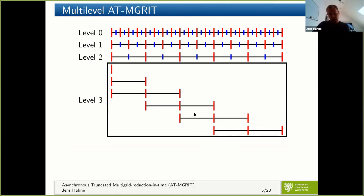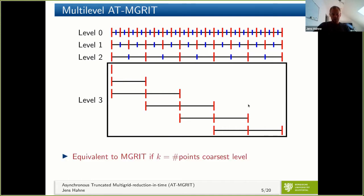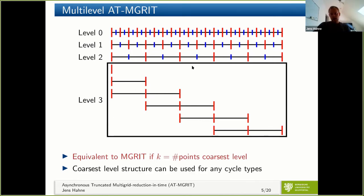We can extend this to a multi-level setting. We use classical M-Grid on the fine levels, and on the coarsest level — here a four-level multigrid — instead of one global grid, we again use local coarse grids with k equals three, which can be solved in parallel. Again, this is equivalent to parareal if k equals the number of points on the coarsest level, meaning all local coarse grids go back to the initial condition. This local coarse grid approach can be used for any type of cycle structure, such as V-cycles, F-cycles, or nested iterations.